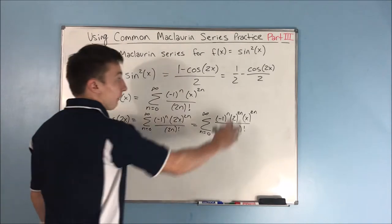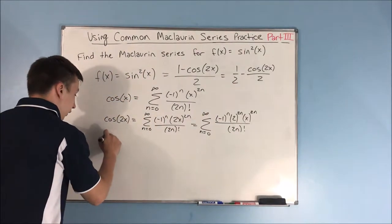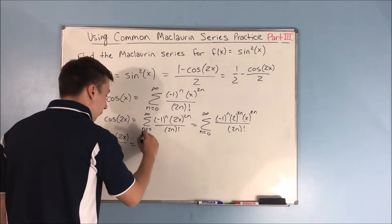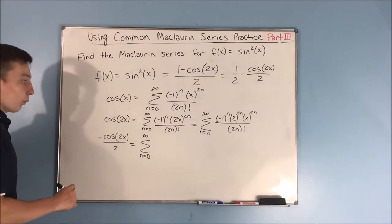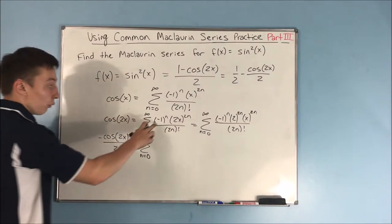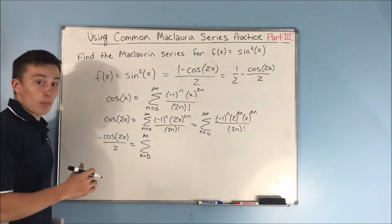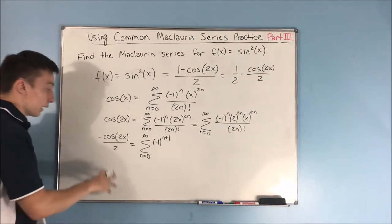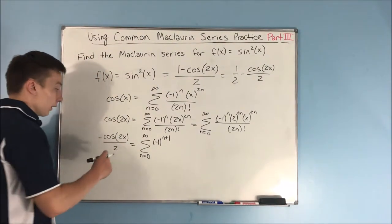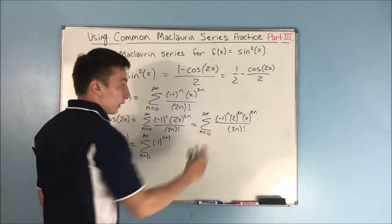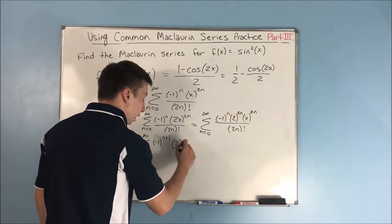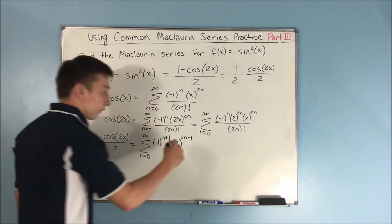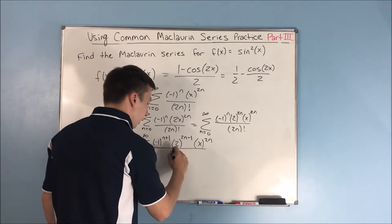For the next piece, we have negative cosine of 2x over 2 — make sure you don't forget that negative. That's equal to the sum from n equals 0 to infinity of negative 1 times negative 1 to the n, which gives us negative 1 to the n plus 1. We're dividing by 2 and we have 2 to the 2n, so that makes 2 to the 2n become 2 to the 2n minus 1, times x to the 2n over 2n factorial.